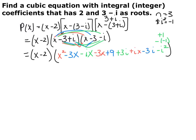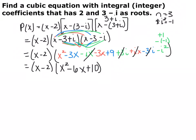Here it is all foiled out. A reminder: i squared is negative one because i is the square root of negative one. If you need a review of complex numbers, watch the section 8.7 review video linked above. What you should notice is everything that has an i in it cancels: negative ix and positive ix cancel, positive 3i and negative 3i cancel, and the negative i squared becomes a positive one. So you can simplify.